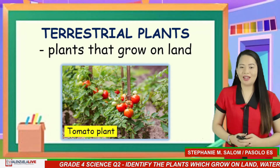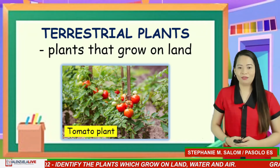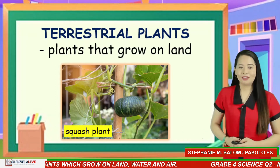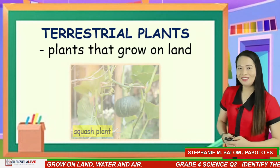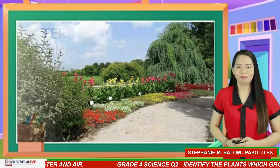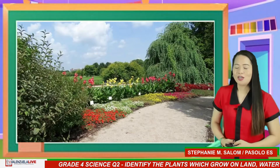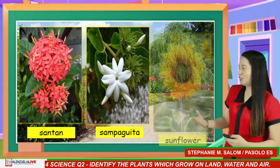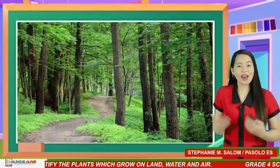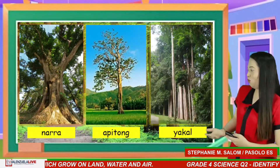Plants that grow on land are called terrestrial plants. Some examples can be found in our vegetable garden, like tomato, squash, and okra. Some terrestrial plants can be found at the park, such as santan, sampaguita, and sunflower. While others can be found in the forest, such as narra, apitong, and yakal.